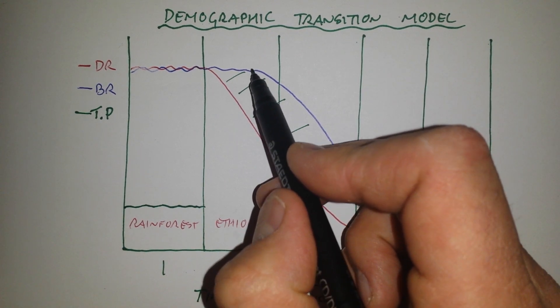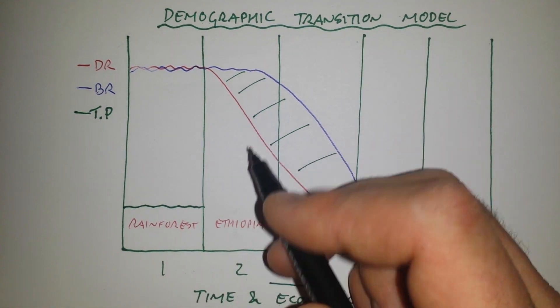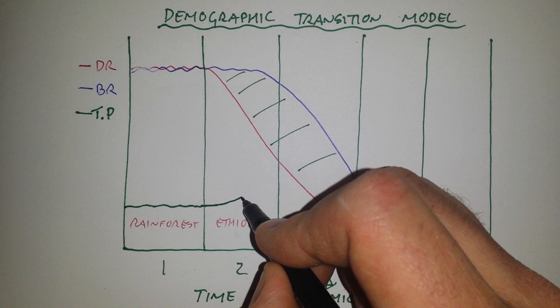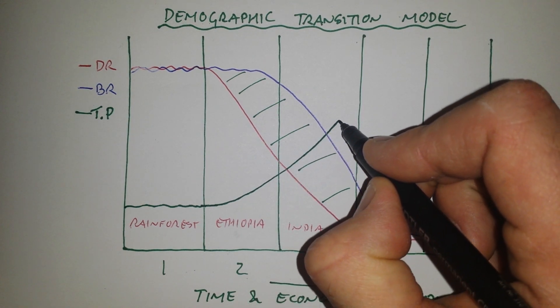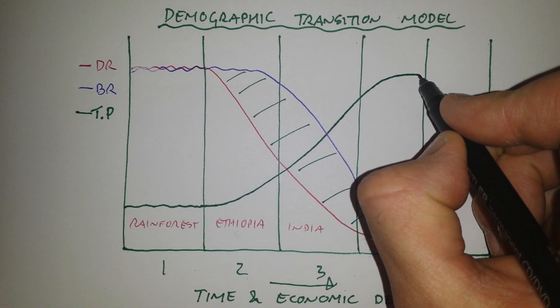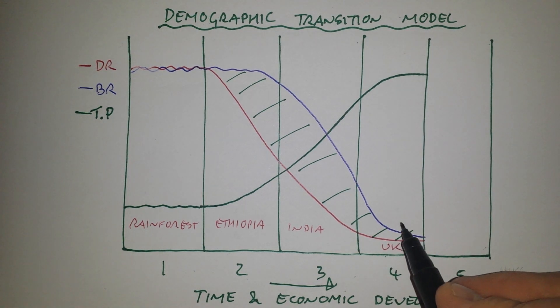However, in stage two, because the birth rate's higher than death rate and death rate's falling, the population starts to increase. And that continues through stage three, but then levels out in stage four, because now the birth rate and death rate are both low.